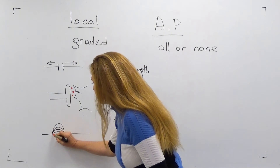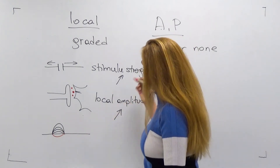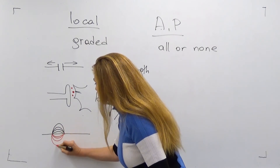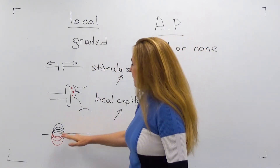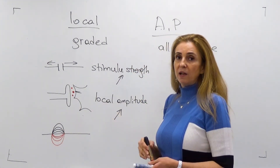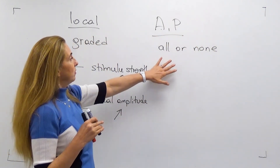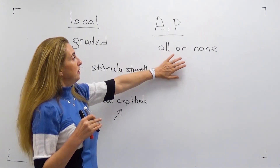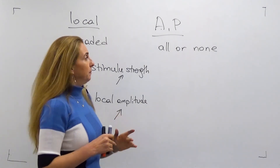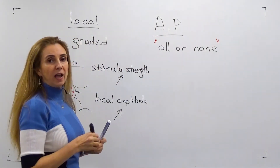For hyperpolarizing local potentials, as stimulus strength increases, the amplitude of hyperpolarization also increases. Because local potentials can have different amplitudes we say they are graded. Action potentials, however, are always the same size in a given excitable cell — this is called the all-or-none property.